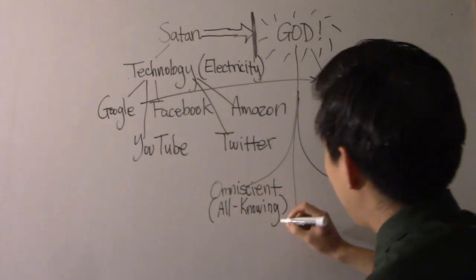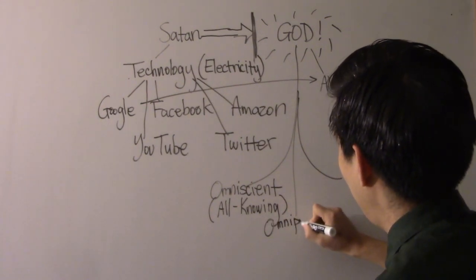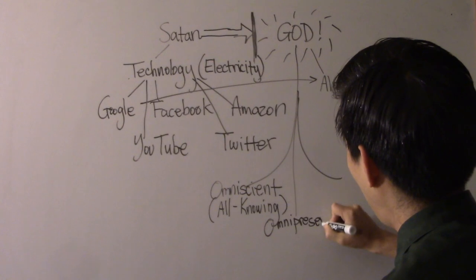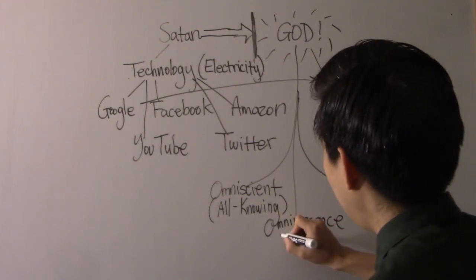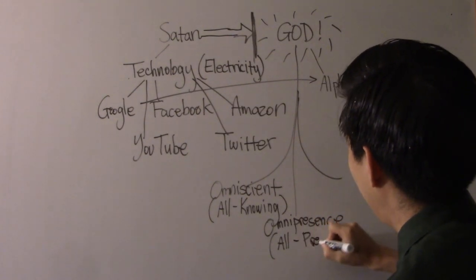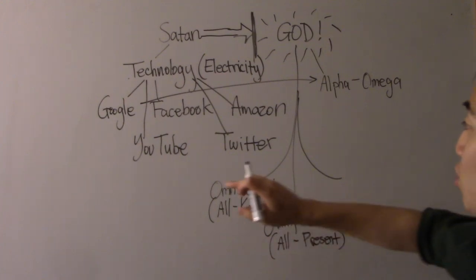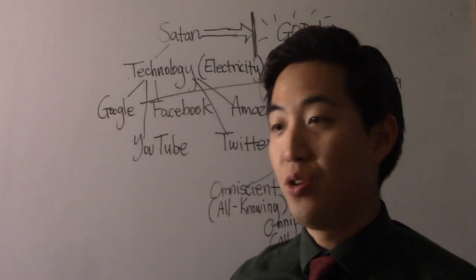Another thing God is known for is omnipresence. Omnipresence. Why? It means he's all-present. He's everywhere. You can't hide from God. He is everywhere.